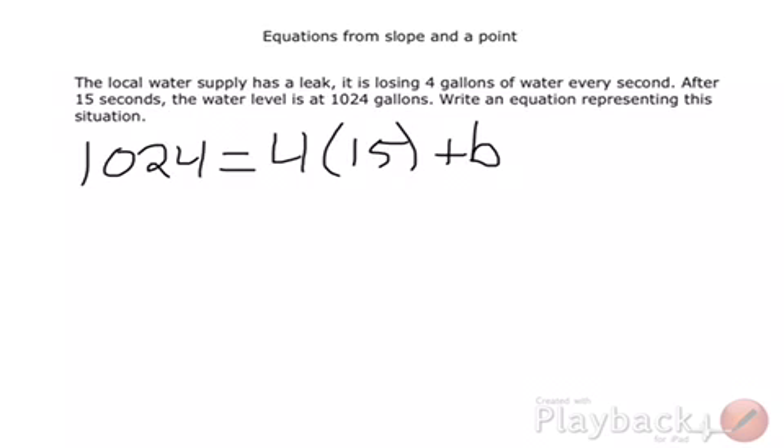If we want to write the equation, as soon as you hear equation of a line, you should be automatically thinking Y equals MX plus B. Now we just plug in the information that we have in the problem. Our Y value was 1,024. Our slope was 4 gallons per minute. And our X value was 15. What we're trying to find here to create the equation of the situation is, where did the local water supply start at? We solve for B. We'll do 4 times 15, which is 60. Get rid of that 60 to get B by itself, so we will subtract 60 on both sides.